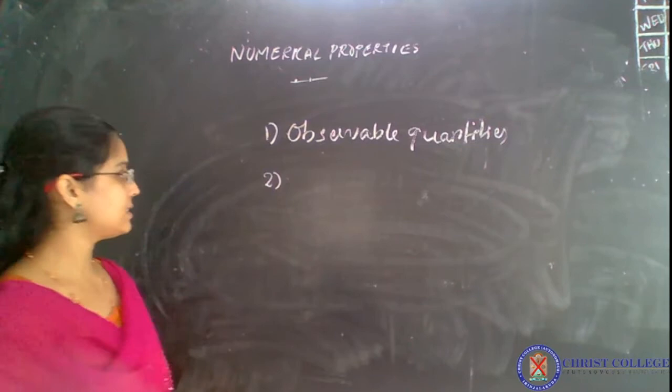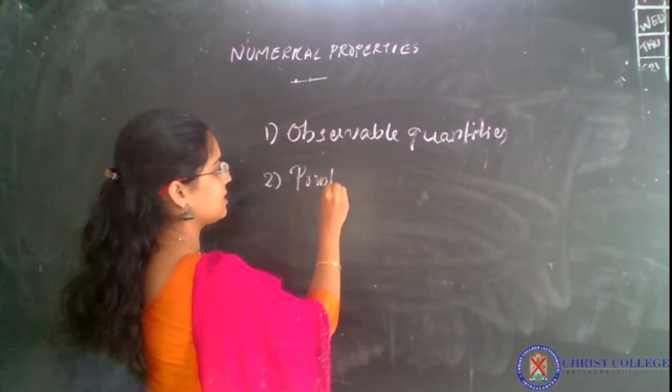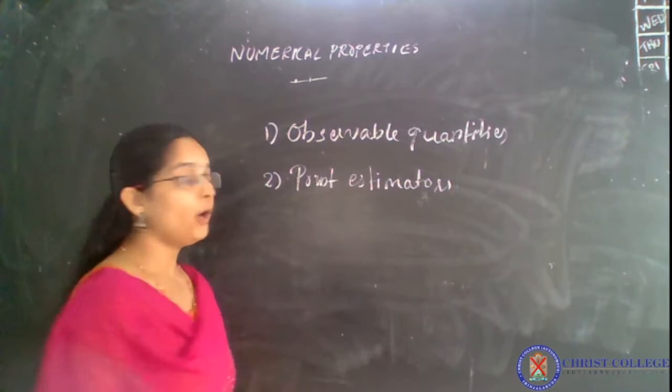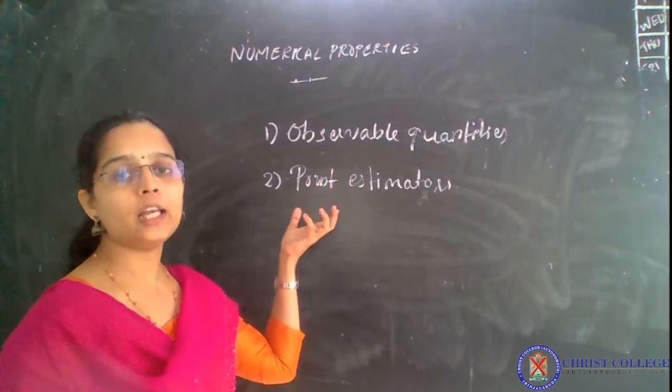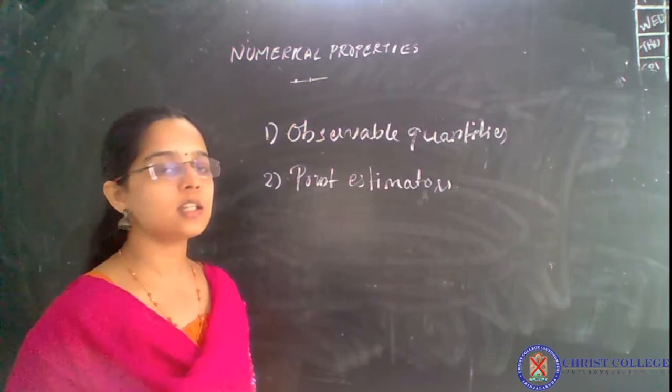The second property says that OLS estimators are point estimators. This means that given a set of samples, we will get a single value as the estimated value by using the least square estimation method. The least square estimators thus obtained will be point estimators.